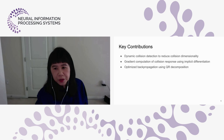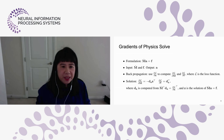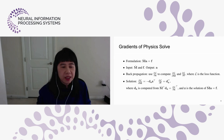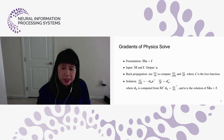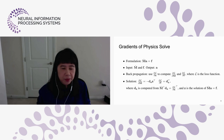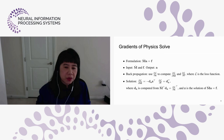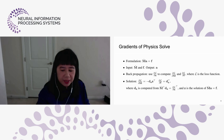For the gradients for the physics solve, we derive from the basic formulation of force equals mass times acceleration (F = ma). The inputs are mass and forces, and the output is acceleration. To derive gradients for backpropagation, we use the standard formulation of computing differentiation with respect to the loss function — essentially computing the differentiation of the loss with respect to acceleration, given the same differentiation with respect to mass and forces.